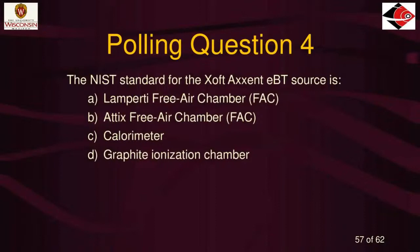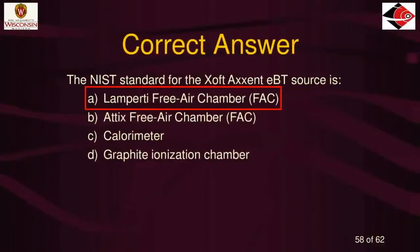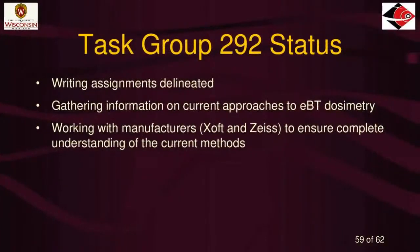The correct answer is A, the Lamperti free air chamber. Most everybody answered that, but several answered the Attix free air chamber — which is probably the most common free air chamber covered in textbooks for mammography energies. It's very similar to the Lamperti chamber but used for slightly different purposes for mammography X-ray beams, and it was not the one chosen for the Zoft project. A calorimeter is definitely not used — the energy is too low. The graphite ion chamber can't be used either because it has too thick a wall.